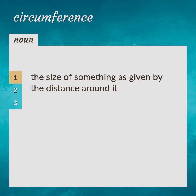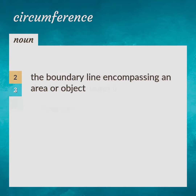The size of something as given by the distance around it. Perimeter: the boundary line encompassing an area or object.